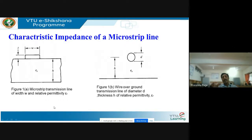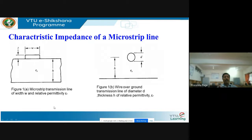Next, let us derive an empirical expression for the characteristic impedance of a microstrip transmission line. The characteristic impedance is very important because the SMA connector at one side has an impedance of 50 ohms, which must match the microstrip transmission line impedance. Ultimately, these microstrip transmission lines carry digital information — ones and zeros — from one point to another; they can be your address and data bus.